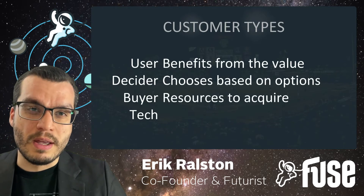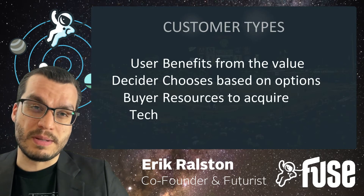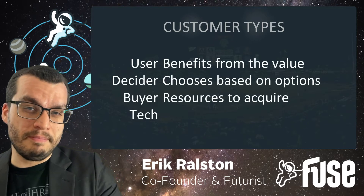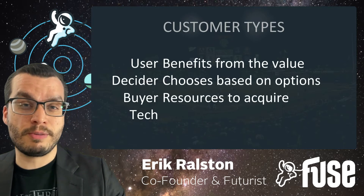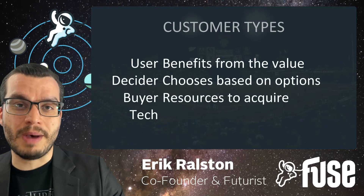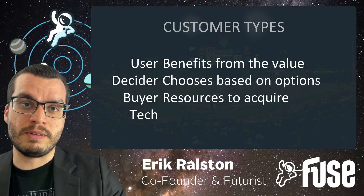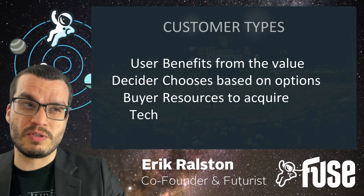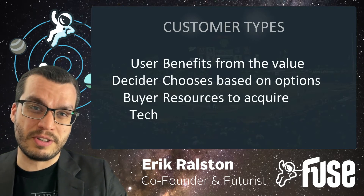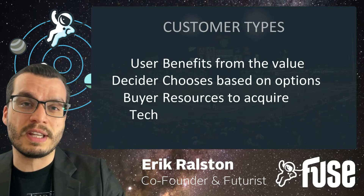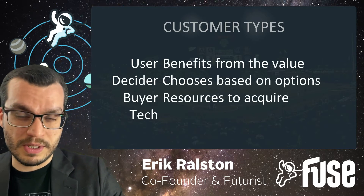The next type is the buyer, who has the resources to acquire the item. This could be as simple as whoever in the house has the income. Or it could be a third-party pay model where the buyer is completely separate from the user or the decider — for example, if it's something you claim health insurance against. The user might be the patient, but the buyer is actually the insurance company. In that case, you have a slightly more exotic business model that we can talk about next week.